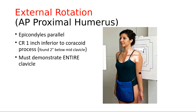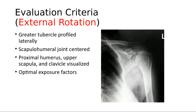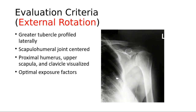Our IRs are either 14 by 17 or 16 by 16, so collimate approximately to a 10 by 12 crosswise to capture the anatomy. This particular example appears collimated 10 by 12 lengthwise — you would open the collimation a little more side to side and could afford to lose some at the bottom. We want the entire joint, some of the shaft of the humerus, and the entire clavicle. That is our external rotation of the shoulder.